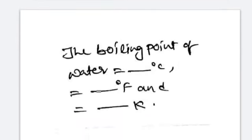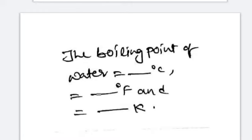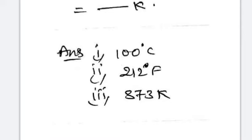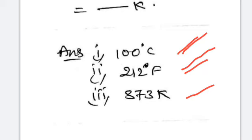The boiling point of water is equal to: 100 degrees centigrade, 212 degrees Fahrenheit, and 373 Kelvins. The boiling point of water is 100°C, 212°F, and 373 K.